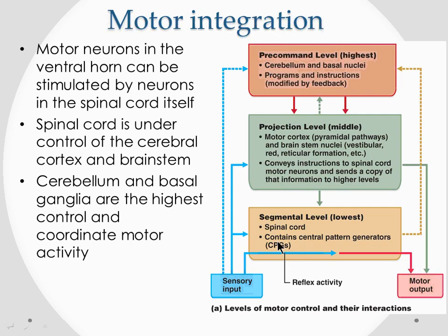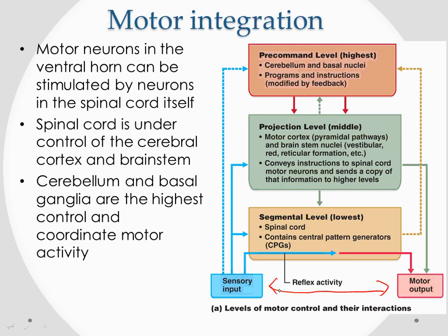Motor neurons in the ventral horn can be stimulated by neurons in the spinal cord itself. A sensory fiber can come into the spinal cord and make contact with the motor fiber, which then goes out to skeletal muscle. This occurs at the spinal level itself, which we'll see in the next few slides as what is known as a reflex or reflex arc.